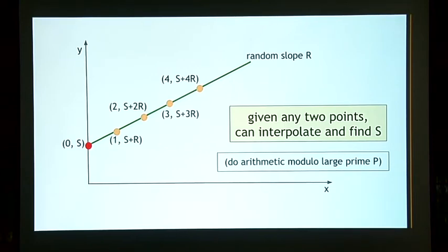But given just one point, you don't really know anything. Because if you have, say, this point, well, the line might be sloped like this, but equally likely it might be sloped like this. It could be sloped any way at all. So given just this point, you don't really know anything about where this line might cross the y-axis, so you don't know anything about s. In fact, you can prove that if you do this arithmetic modulo a large prime p like we did before in the previous slide, that any two points are sufficient to interpolate and find s, and fewer than two points don't tell you anything about s. And so this gives us n equals any value and k equals 2.